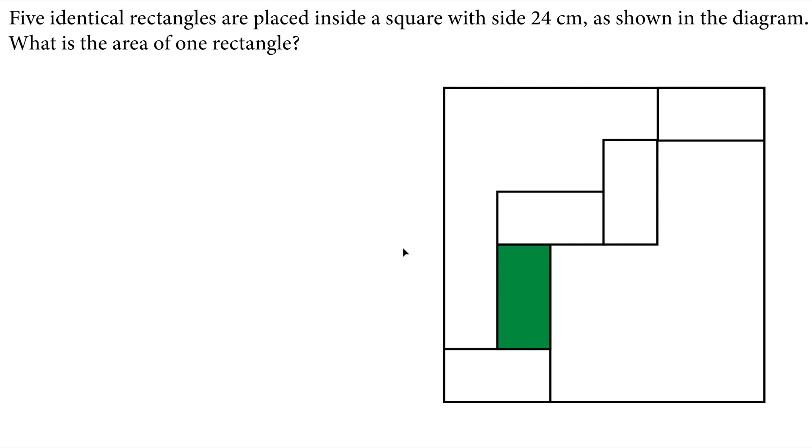It's asking for one single rectangle area. So we are given 24 centimeter side length on each side of the square. We know they are identical but we don't know anything else about this question. So we will solve this problem using a system of equations.